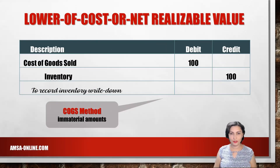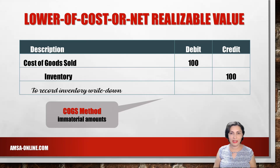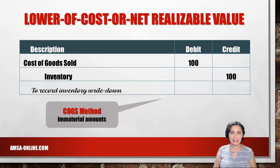Let's look at general journal entries to record write-downs of inventory. In both cases, inventory is reduced or credited. Inventory is an asset account and is increased by debit and decreased by credit. If the amount is immaterial, the debit is to the cost of goods sold account. The cost of goods sold is an expense account and is increased by debit and decreased by credit. I'm posting the link to the rules of debit and credit video here and in the description below.